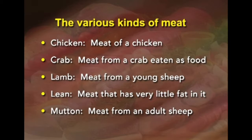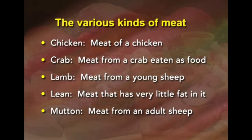Further types include: lamb — meat from a young sheep; lean meat — meat with very little fat content; mutton — meat from adult sheep; pork — meat from pig; poultry — meat from birds such as chicken, turkey and ducks; veal — meat from a young cow; venison — meat from deer; and wild boar — meat from a wild pig.